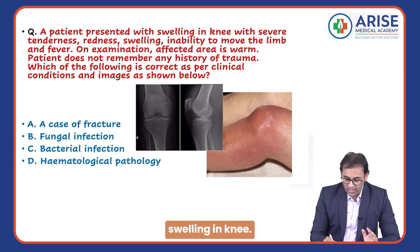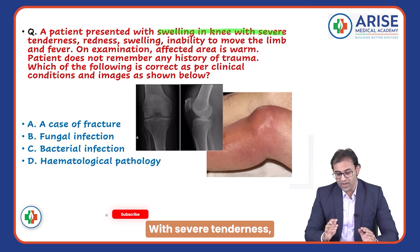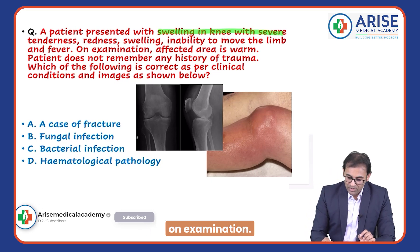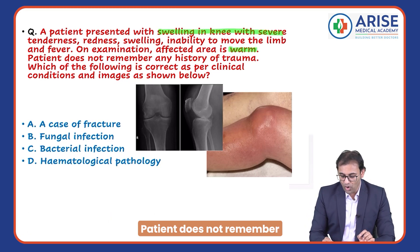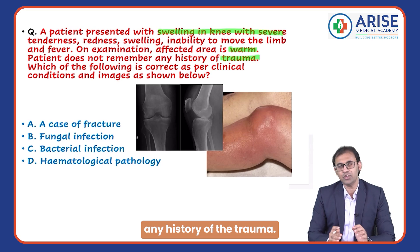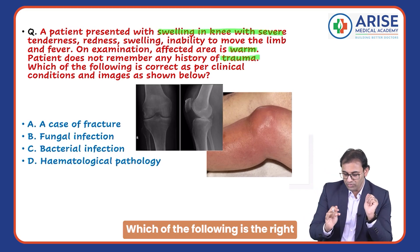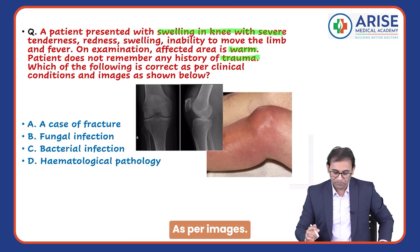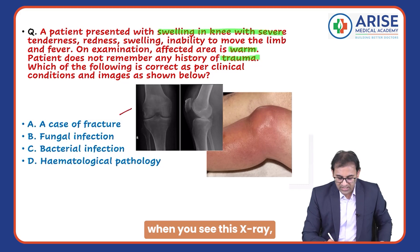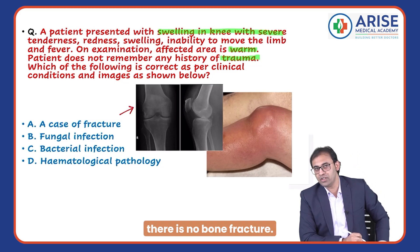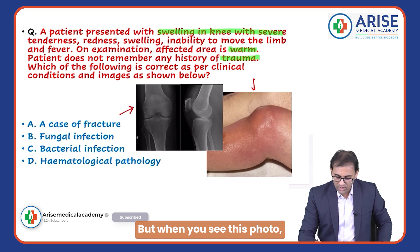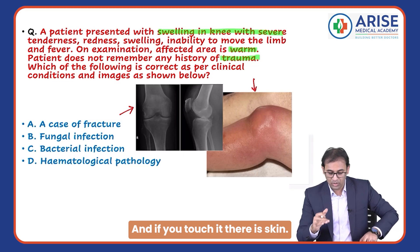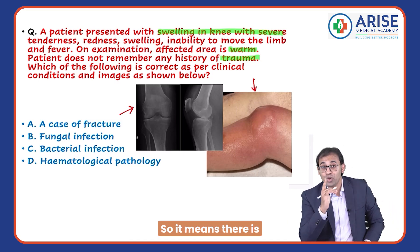A patient presented with swelling in the knee, severe tenderness, redness, inability to move the limb, and fever. On examination, the affected area is warm. The patient does not remember any history of trauma — no trauma. When you see this X-ray, there is no bone fracture. But when you see this photo, there is swelling, redness, and shining, and if you touch the skin, the affected area is warm.